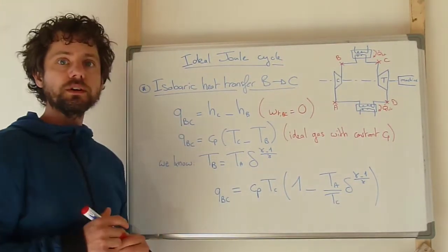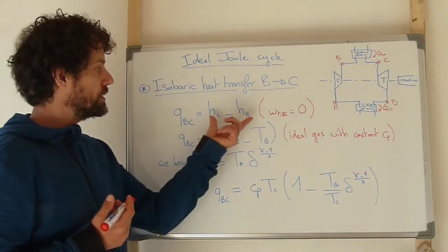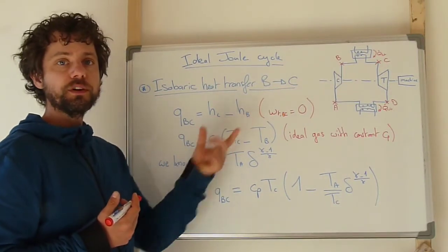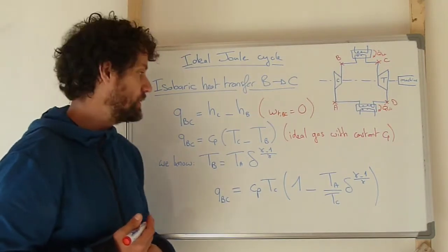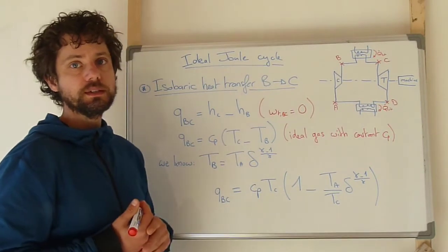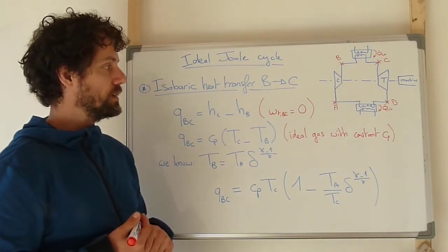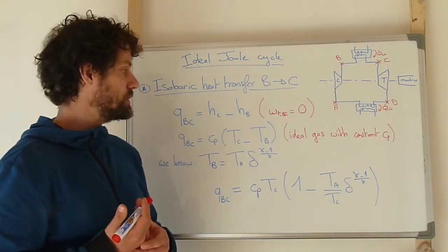So the heat transfer between B and C is directly equal to the specific enthalpy variation between B and C. Once again, because we have an ideal gas and we can also consider that the thermophysical properties, and here in particular the Cp, is constant.